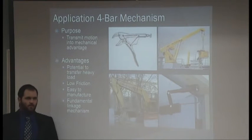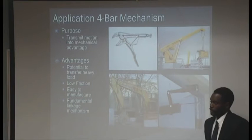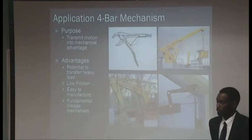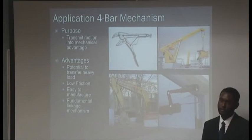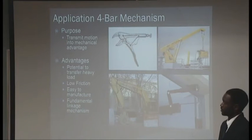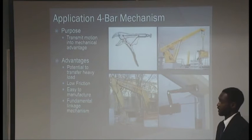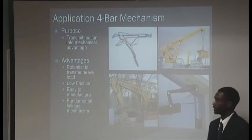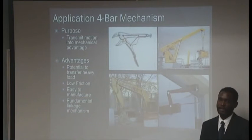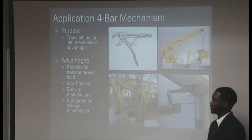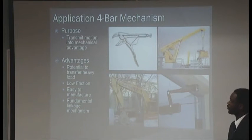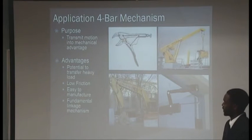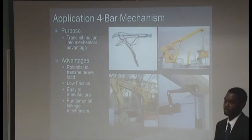Now for the application of the four-bar mechanism. The purpose of a four-bar mechanism is to provide a mechanical advantage. In a sense, the four-bar mechanism is an improved version of the lever and fulcrum. Some of these advantages include the potential to transfer heavy loads and transfer these heavy loads with very little friction. One of the benefits and advantages to a four-bar mechanism is that they're very easy to manufacture, and overall there's a fundamental linkage mechanism. These are some examples of a four-bar mechanism. Although they may not be apparent at first, you can see that a vice grip, a crane, a crane and boom, an excavator bucket, and door closer all implement four-bar mechanisms.